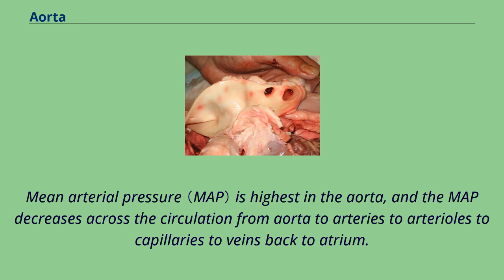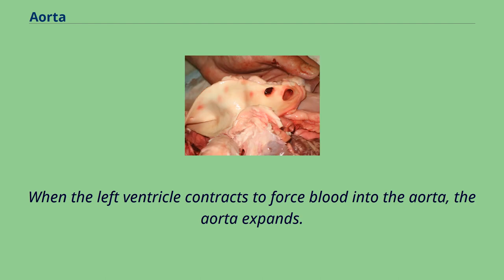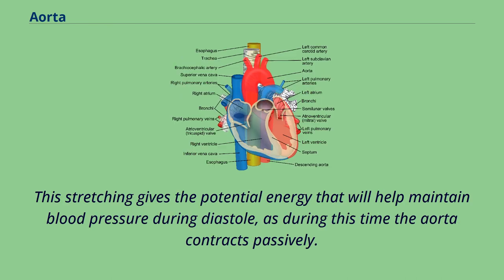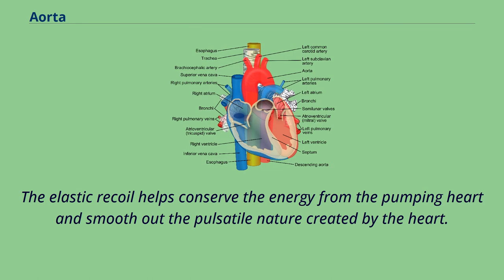The difference between aortic and right atrial pressure accounts for blood flow in the circulation. When the left ventricle contracts to force blood into the aorta, the aorta expands. This stretching gives the potential energy that will help maintain blood pressure during diastole, as during this time the aorta contracts passively. This Windkessel effect of the great elastic arteries has important biomechanical implications. The elastic recoil helps conserve the energy from the pumping heart and smooth out the pulsatile nature created by the heart.